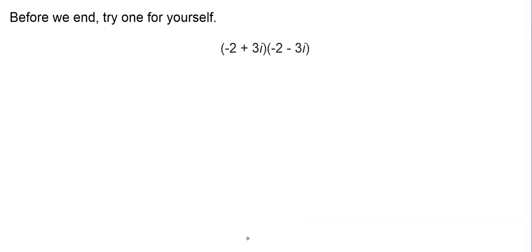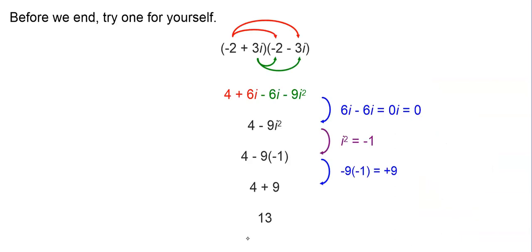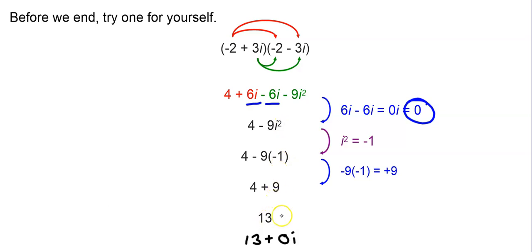Now that we've done a couple of examples, why don't you hit pause and try one for yourself? You should have gotten just the answer 13, or written in complex standard form, 13 plus 0i. Why did we get just a real number when the other examples had an i? When we distributed and multiplied this out, the middle terms were 6i and negative 6i, which canceled each other out. Then i squared became negative 1, a real number, and combining everything gave just 13.